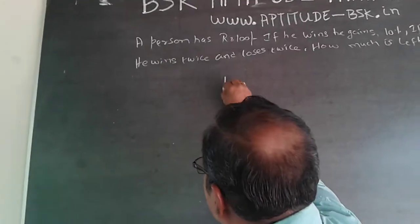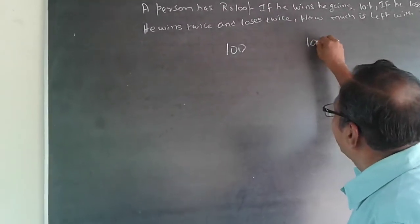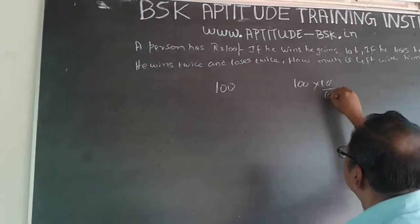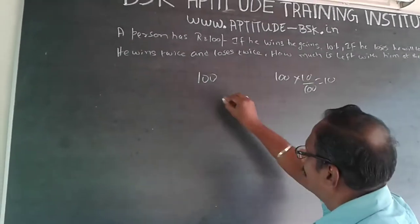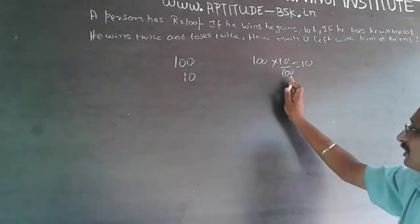100 rupees is the amount he has. He is going to win 10 percent, so 10 percent of hundred is calculated like this: hundred into 10 by hundred will be equal to 10. He is going to win 10.